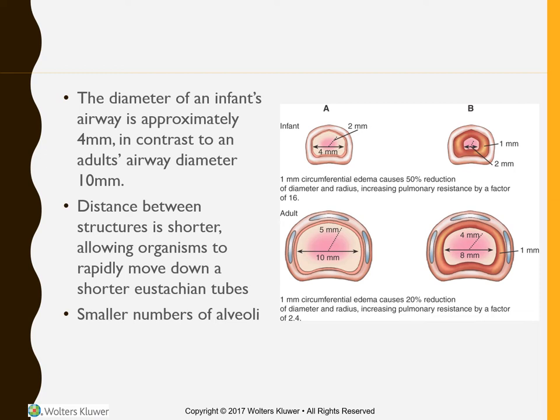The distance between structures is much shorter, which allows organisms to rapidly move down those shorter eustachian tubes. Eustachian tubes being much shorter and going more horizontal increases our risk for ear infections. Children also have smaller numbers of alveoli, which puts them at higher risk for hypoxemia.